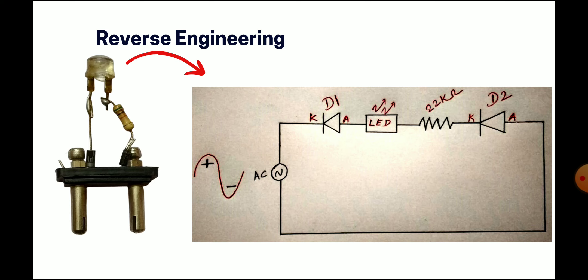By making this AC into a pulsating DC, the load will operate in the pulsating DC condition. Because of that, we can avoid damage to the LED from the AC supply. We are converting the AC into DC supply so that the load can be utilized for a long time. This is the concept of why we are using the diode here.